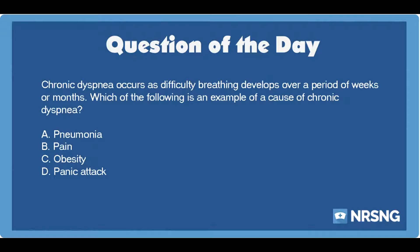Chronic dyspnea occurs as difficulty breathing develops over a period of weeks or months. Which of the following is an example of a cause of chronic dyspnea? A. Pneumonia. B. Pain. C. Obesity. D. Panic attack.